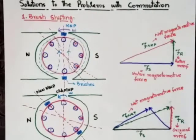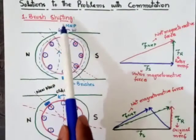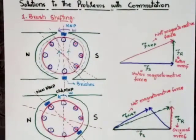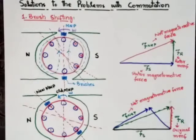The first solution to the problem with commutation is brush shifting. The first attempt to make some improvement in the commutation process was introduced to reduce the sparking effects. This solution addresses both armature reaction and L·di/dt voltages.